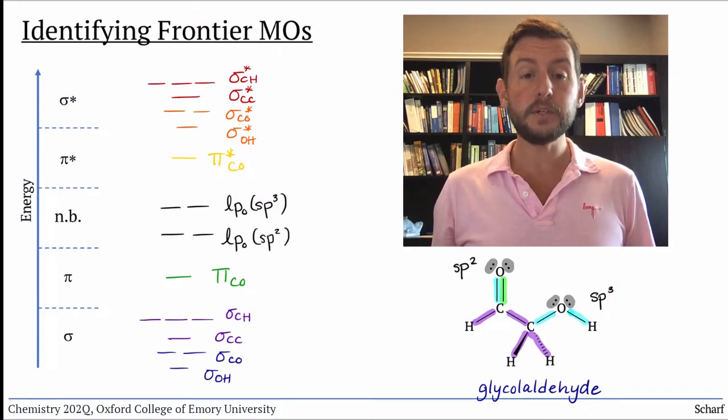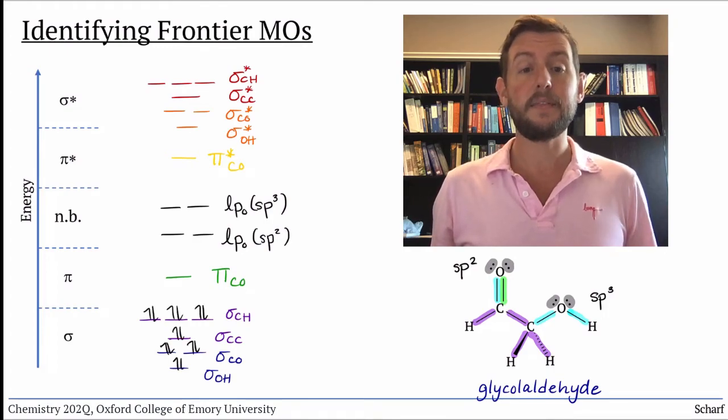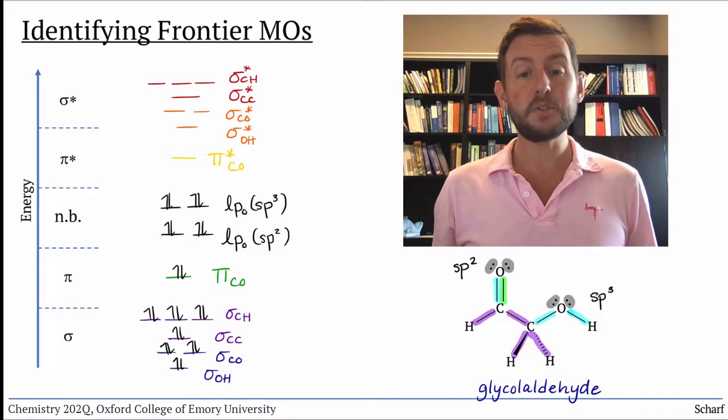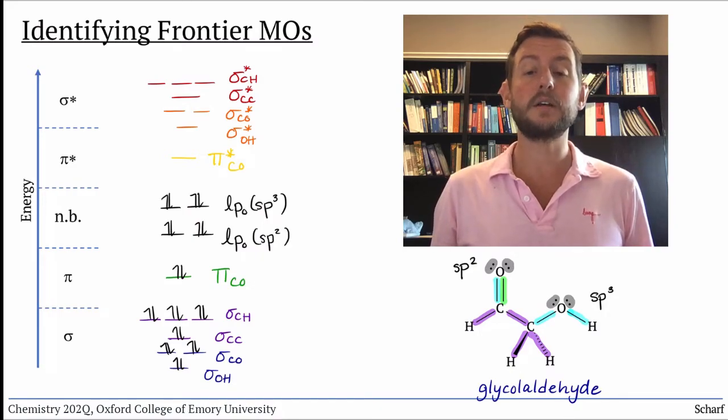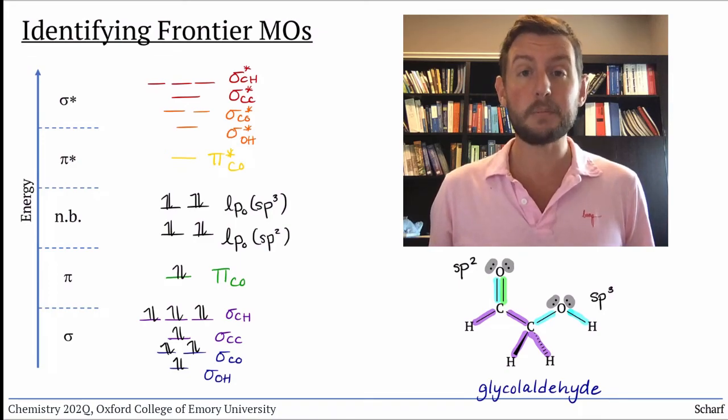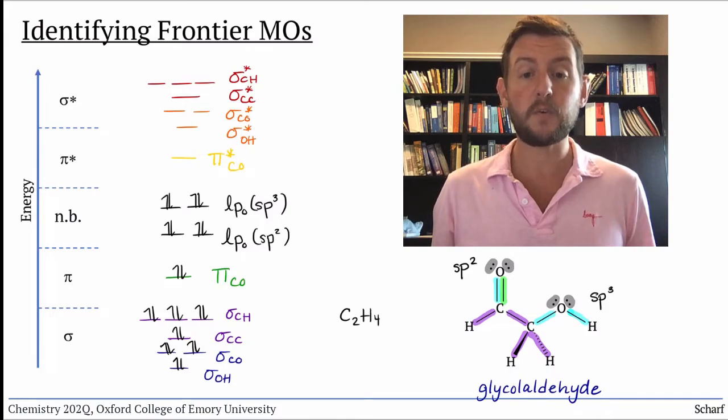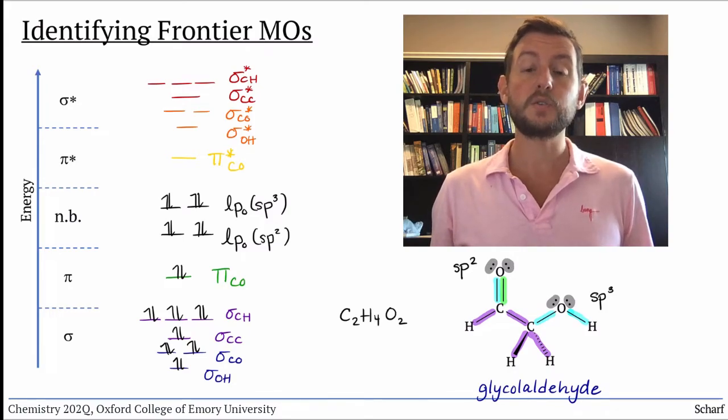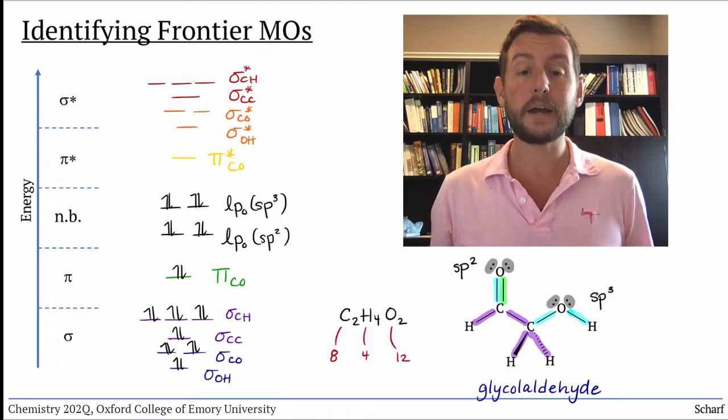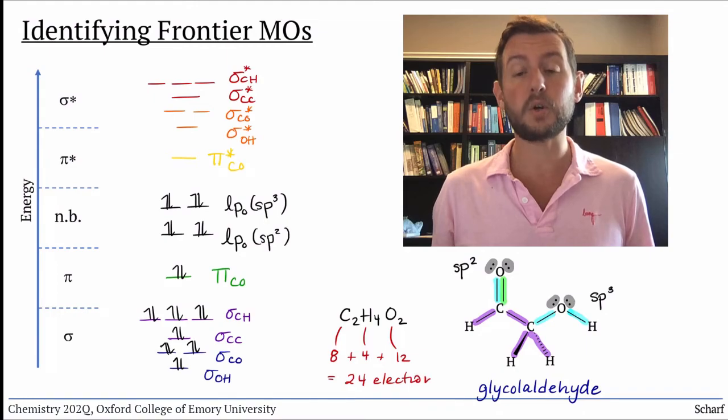From the Lewis structure, we can tell that all the bonds have electrons in them, and that the non-bonding orbitals are full. To double-check that we have the correct number of electrons, we can also tally up the valence electrons from the molecular formula, C2H4O2. So there are eight total electrons from carbon, four from hydrogen, and twelve from oxygen, which gives us 24 total electrons. Yep, we put the right number in.